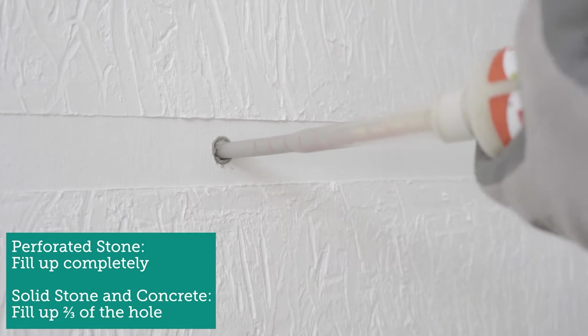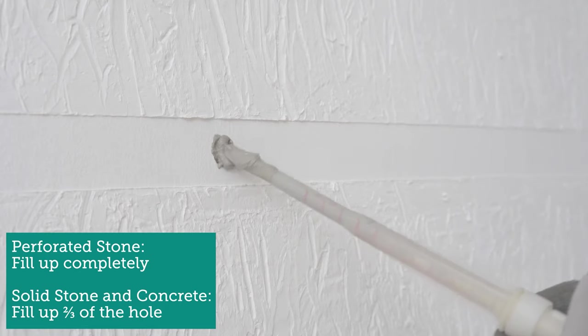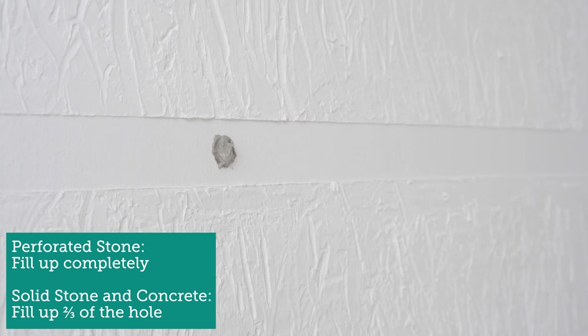Now we can fill our first drill hole with the mortar. We start at the bottom of the hole and fill the hole with mortar to the end. By the way, if you use the mortar for solid brick or concrete, you should fill only two-thirds of the hole.